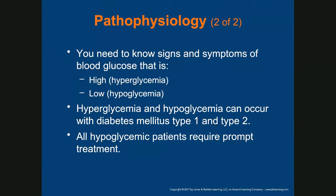A patient with type 1 diabetes is unable to produce insulin. For some reason, their body has destroyed the beta cells of the islets of Langerhans on the pancreas — it's an autoimmune process. Because of that, they are unable to produce insulin and will require insulin daily. It's called juvenile diabetes because it is common in the pediatric population.